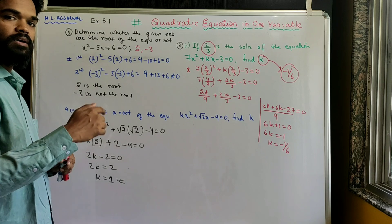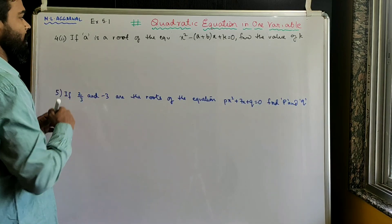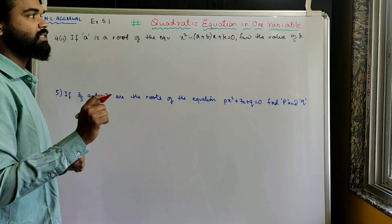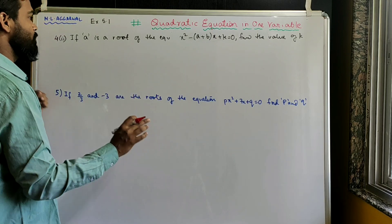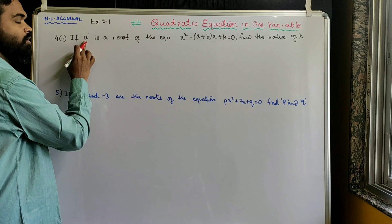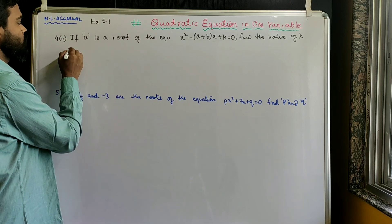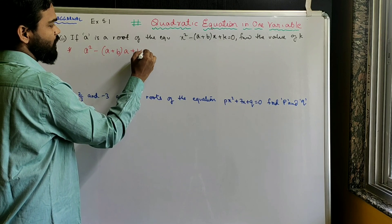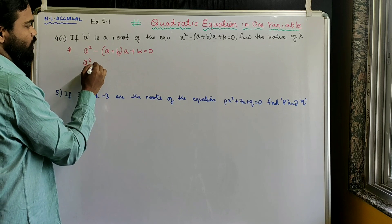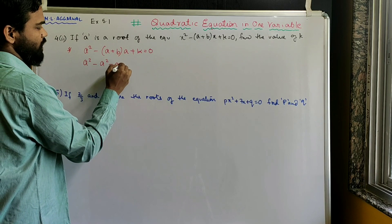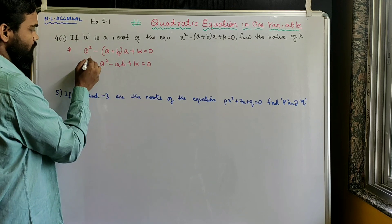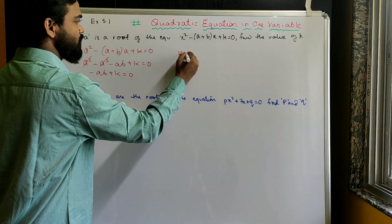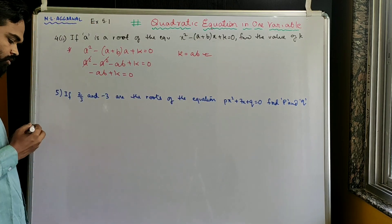Now look at Problem 4 part 2. If a is the root of x² - (a+b)x + k = 0, find k. Substitute x = a: a² - (a+b)a + k = 0, which gives a² - a² - ab + k = 0. The a² terms cancel, so k = ab.